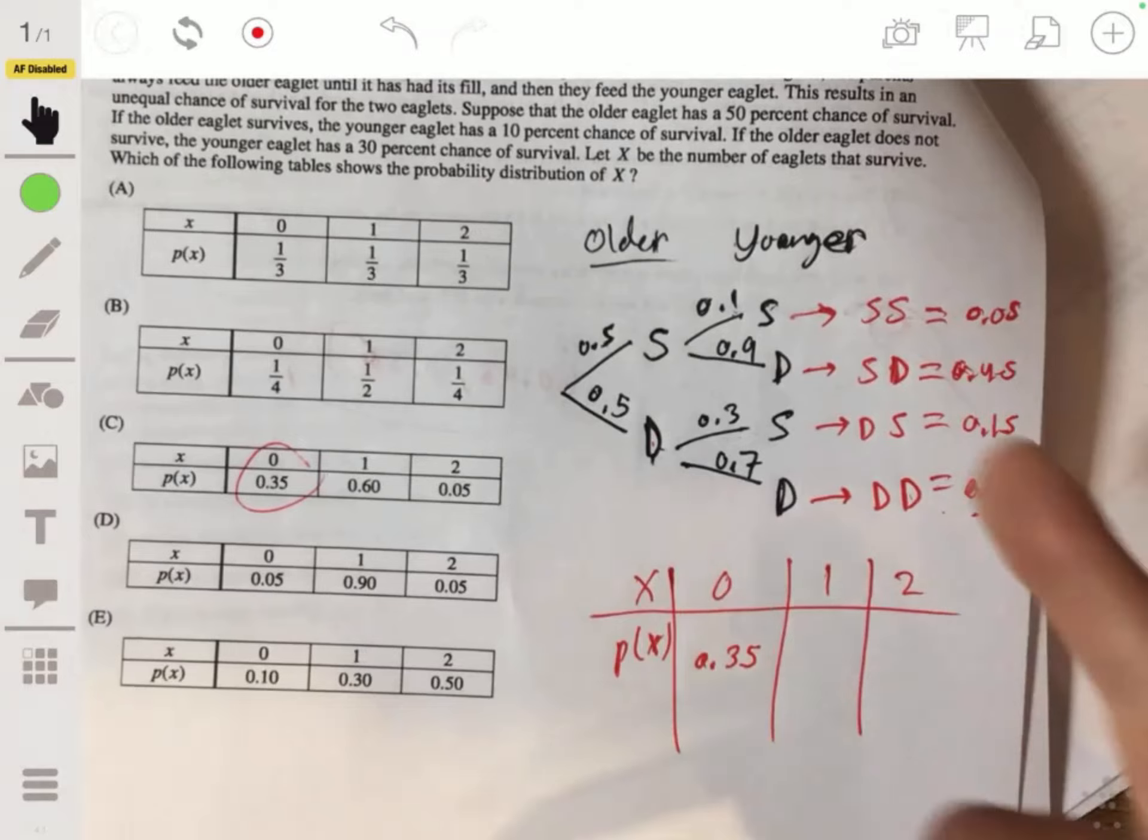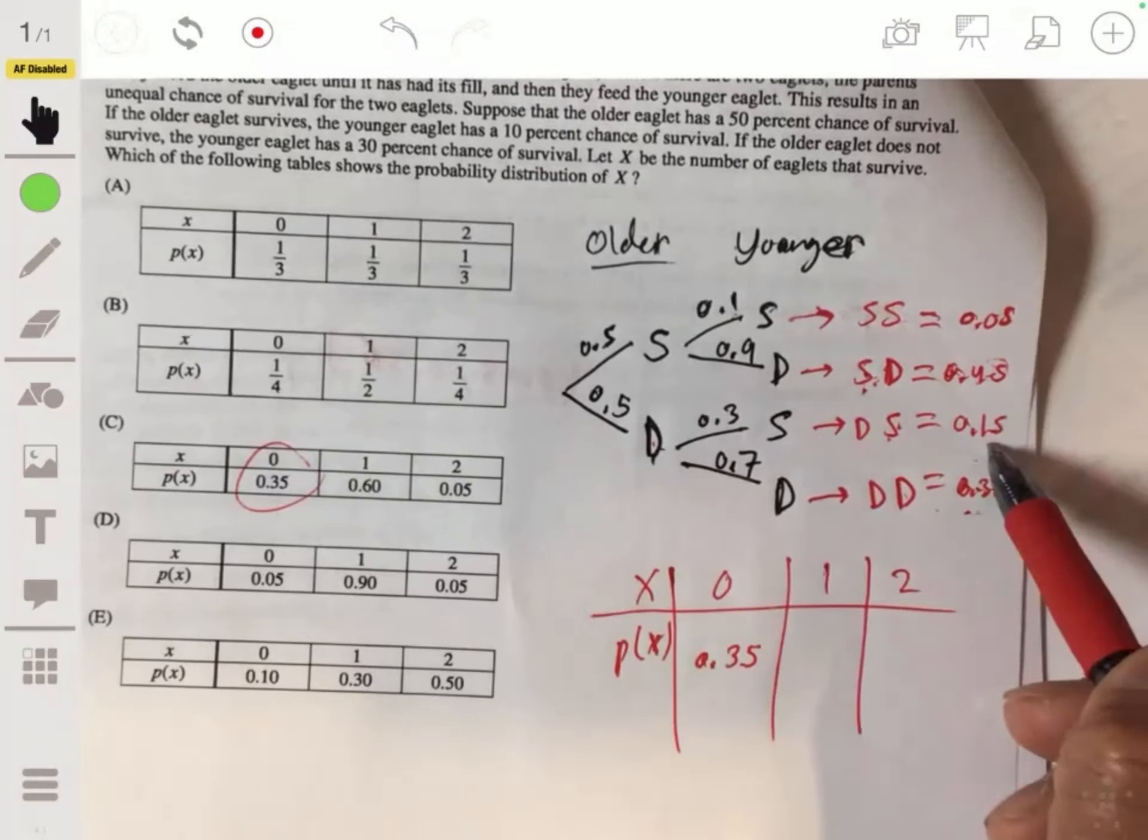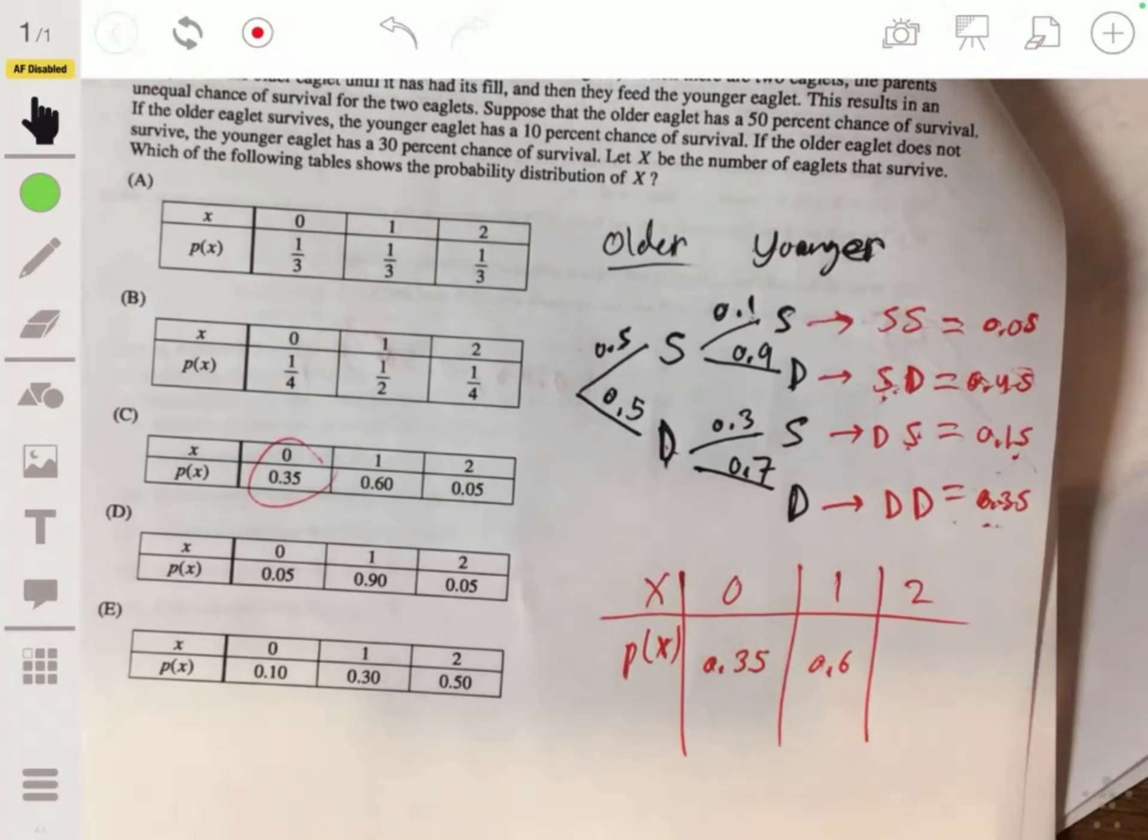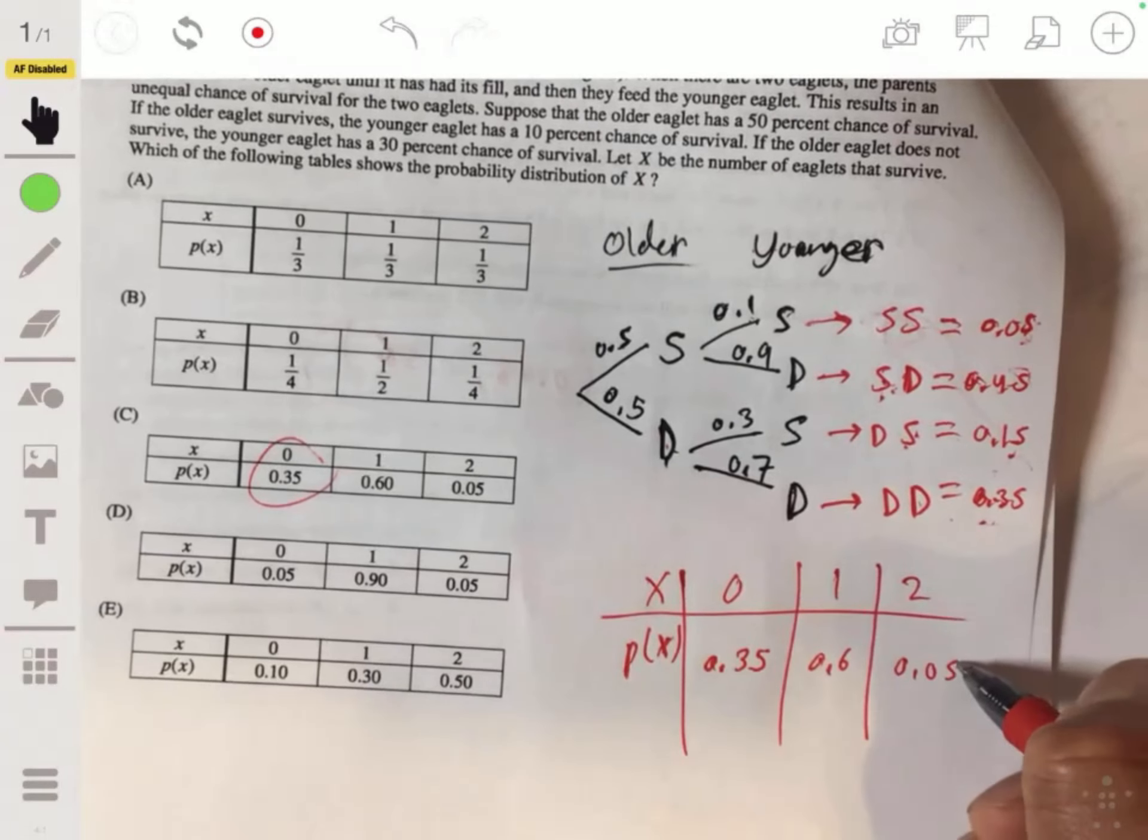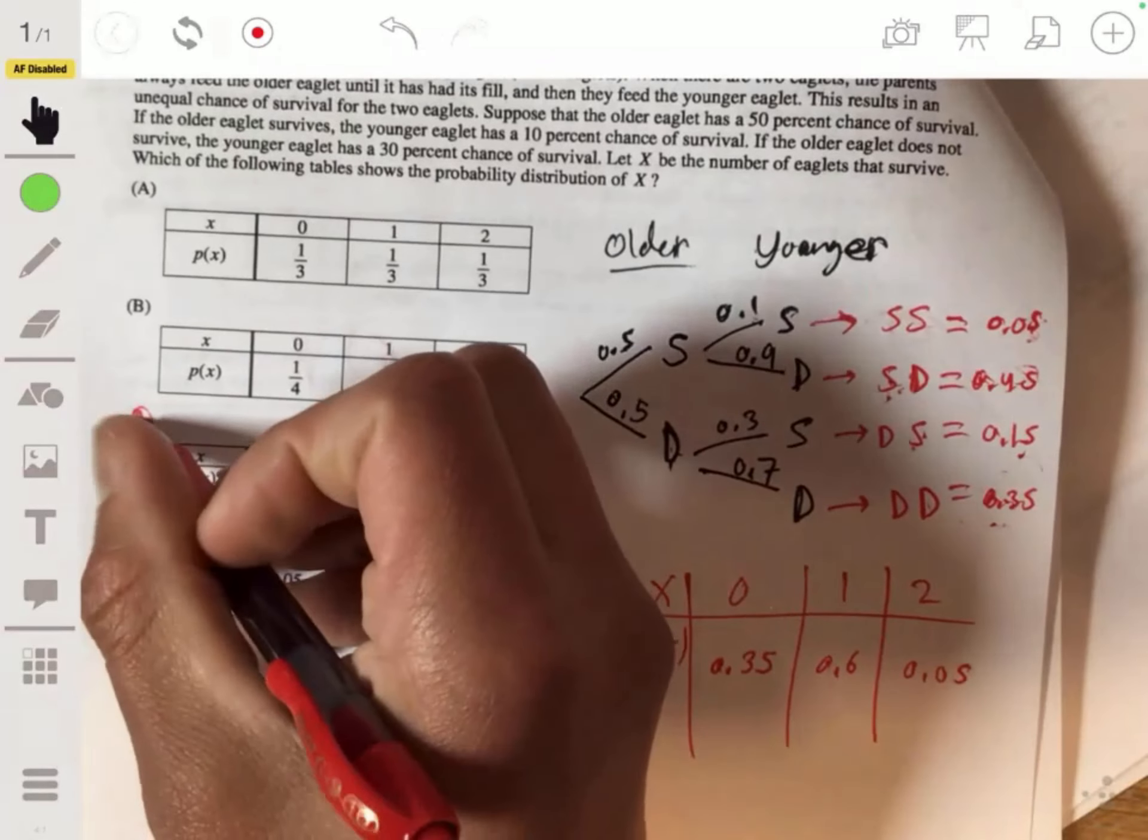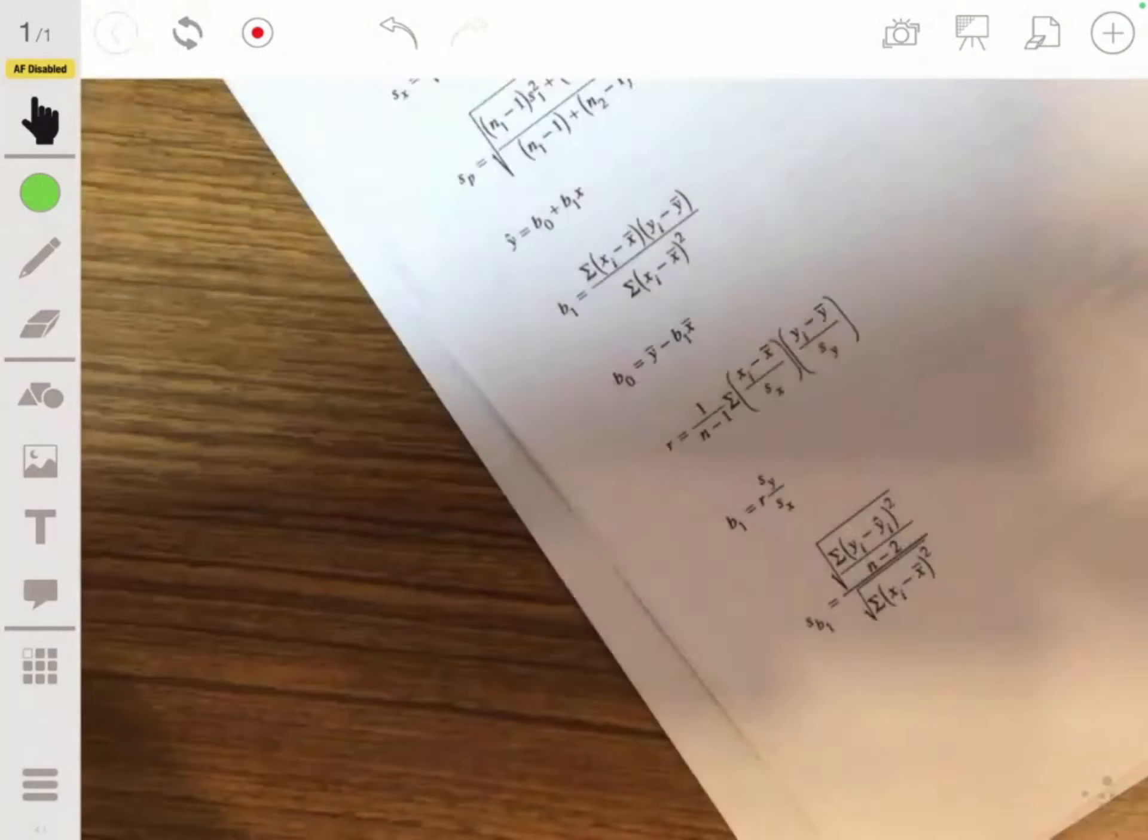If one of them survives, it could be this or this - 0.45 plus the 0.15, that's 0.6. And then they both survive, that's only going to be the 0.05. Yeah, okay, cool. Probability tends to be hard, really work your way through it, practice it. Everything is practice.